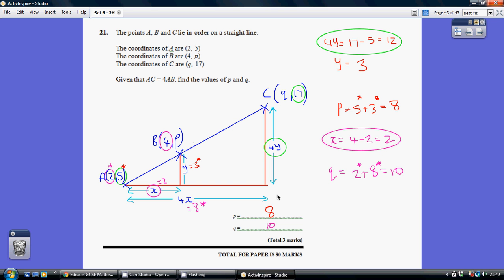Now, with regard to finding out the coordinate for Q, we know that the base of this smaller rectangle is a length of 2 because we're going from A with an X coordinate of 2 to B with an X coordinate of 4. So we know this length here is 2. So therefore, this length here must be 4 lots of 2, which is 8.